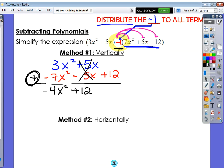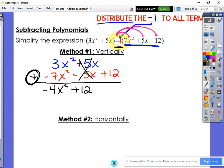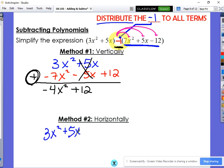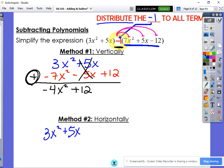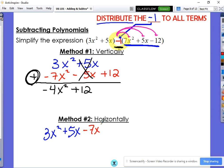Now, it's probably a bit more common to see it horizontally. So let me show you what that looks like. The 3x squared plus 5x once again stays the same. But then as we distribute the negative one, it becomes negative 7x squared, negative 5x, and positive 12.